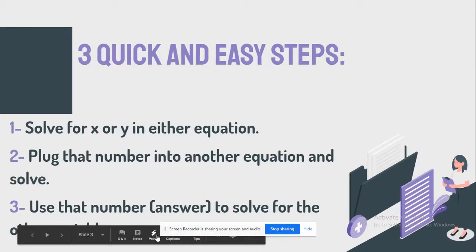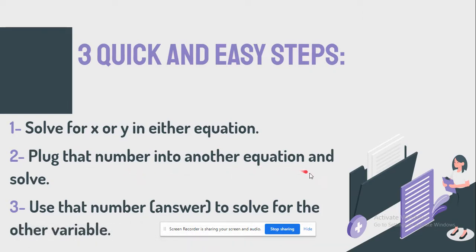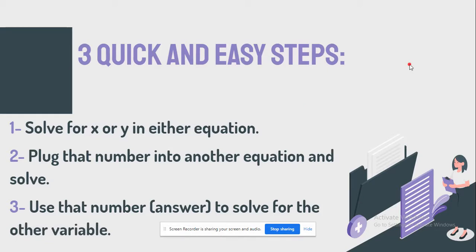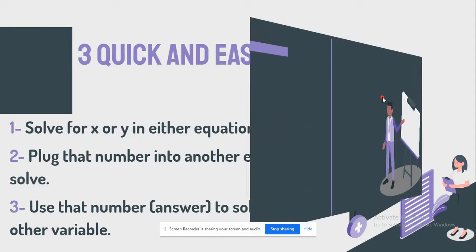There are three quick and easy steps. Step number one is to solve for x or y in either equation. Step number two is to plug that number into another equation and then solve. And step number three is to use that number or answer to solve for the other variable. It seems hard but it's actually easy.